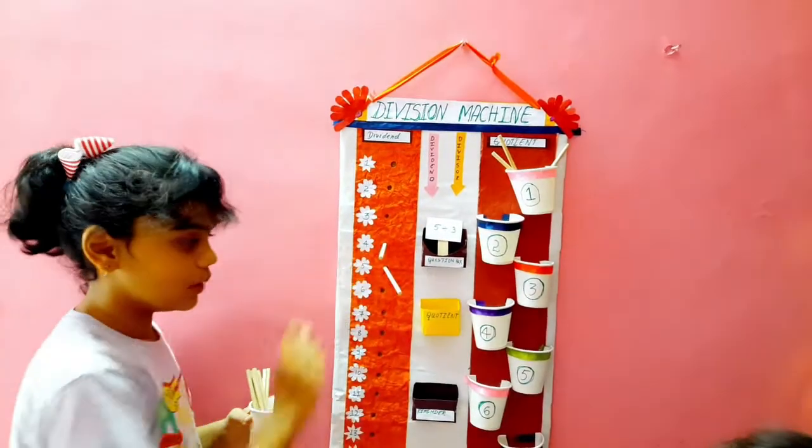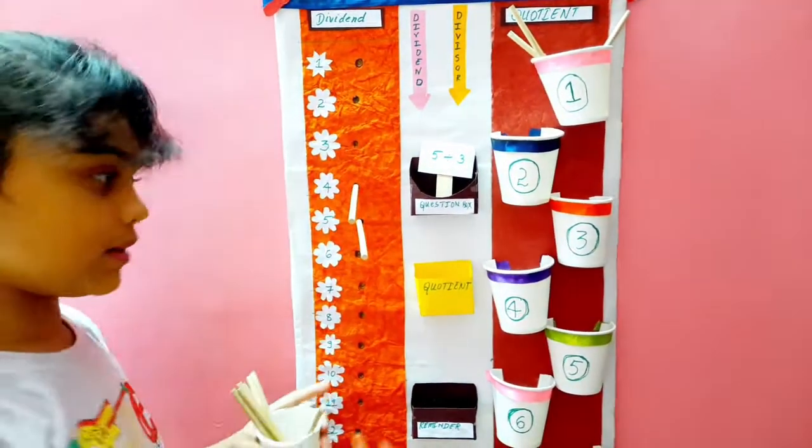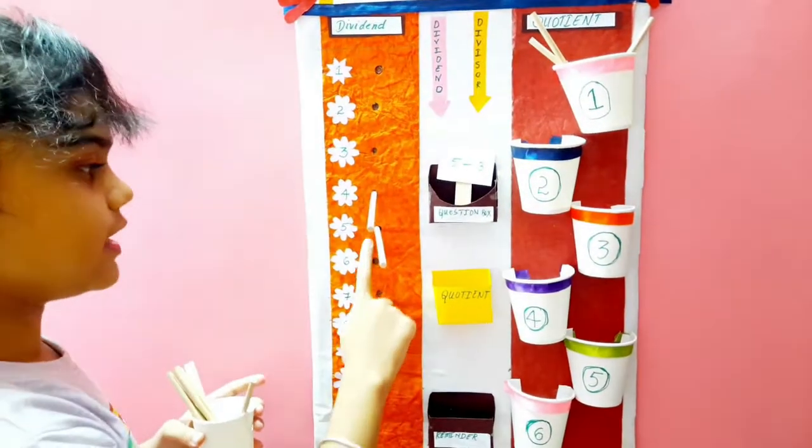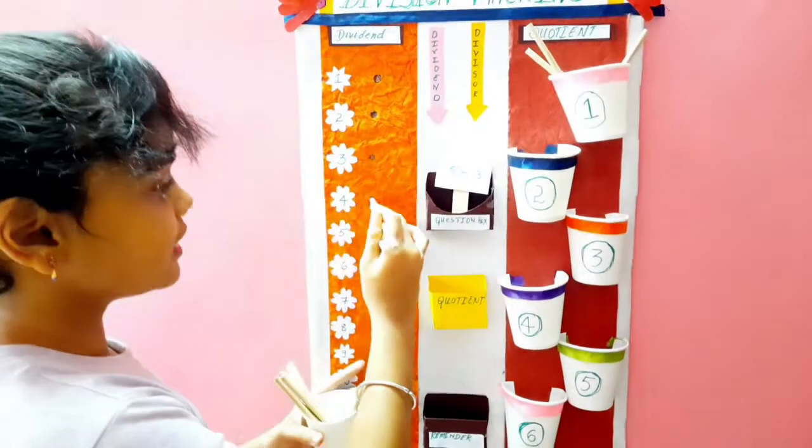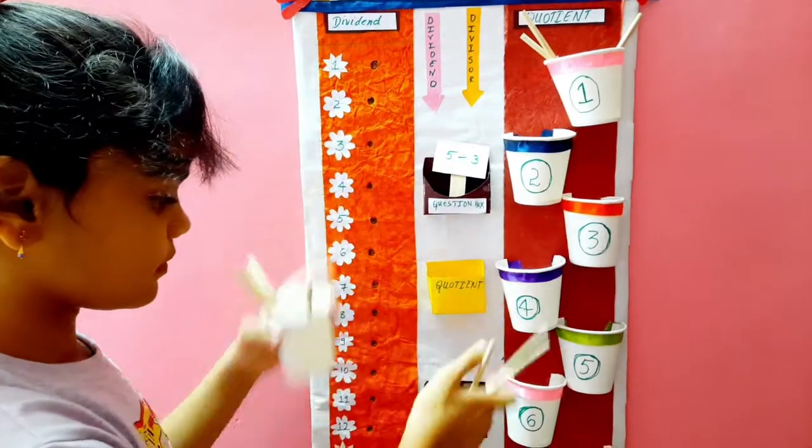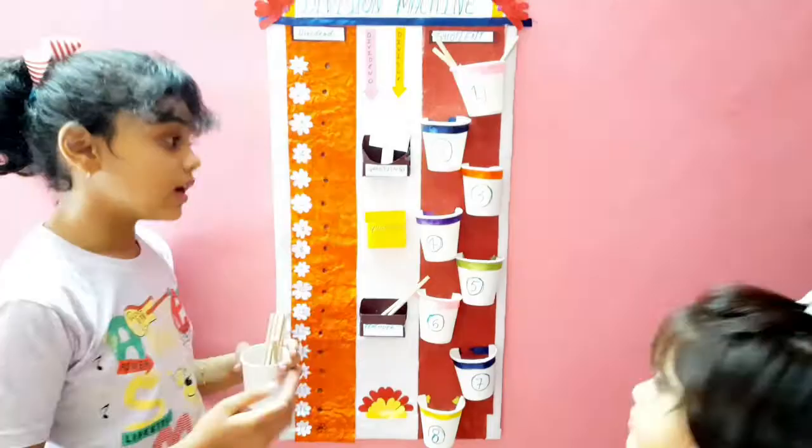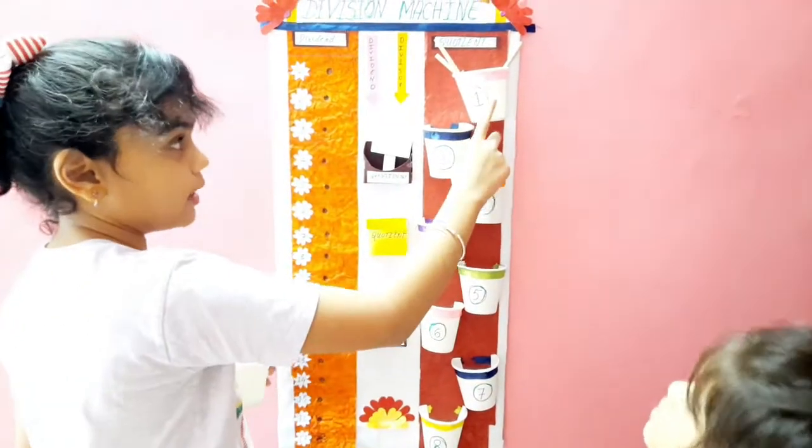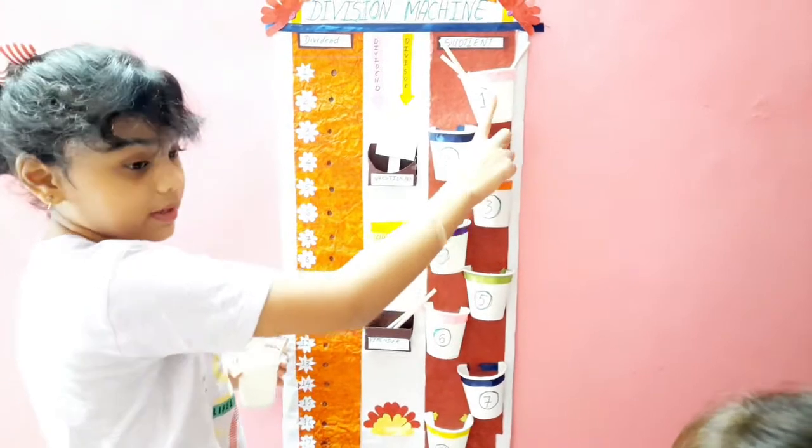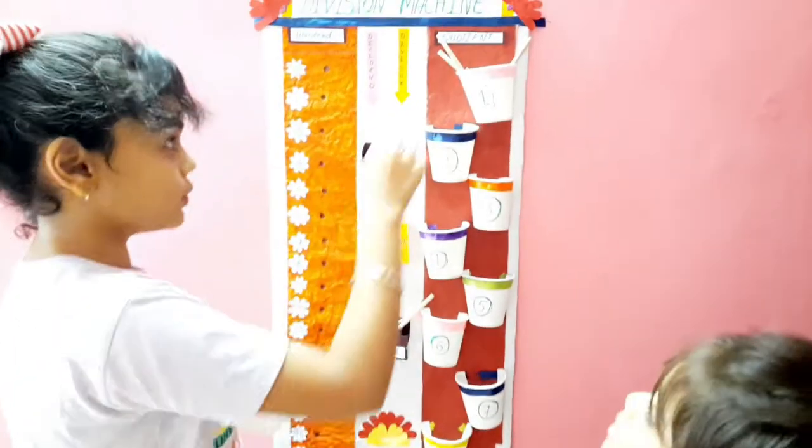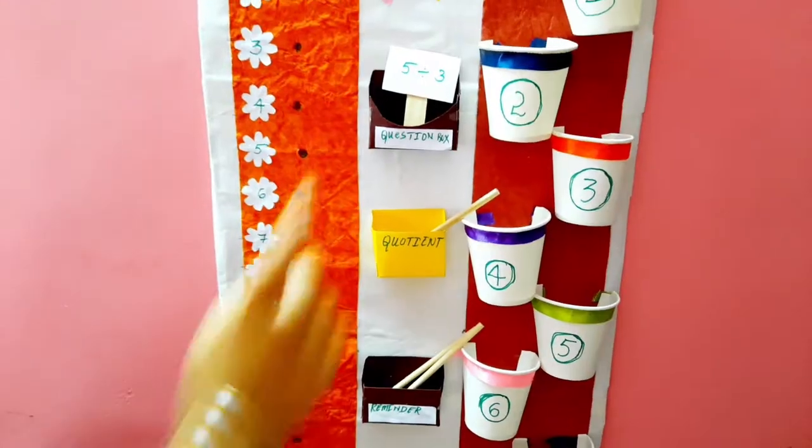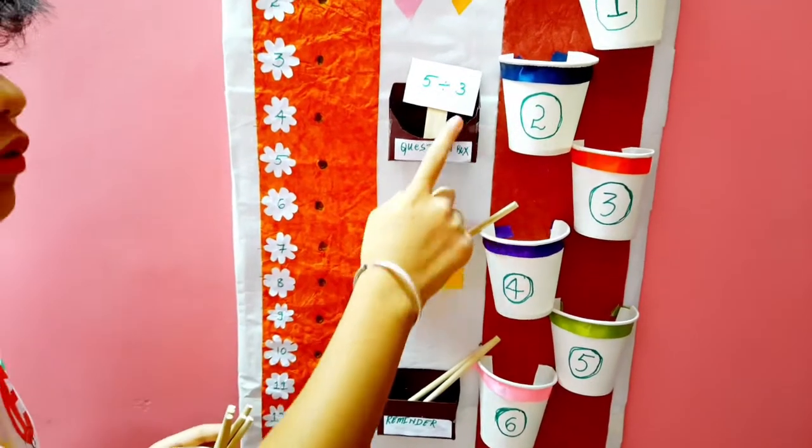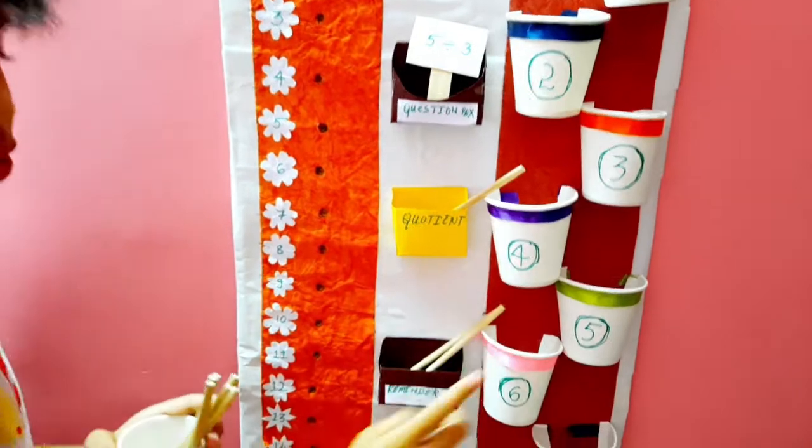So, we have only 2 left. Again, we need to pick out 3. But, we don't have 3. So, these 2 are reminder. Let's keep them in reminder box. Our quotient is 1 because 1 cup is only filled. So, for 5 divided by 3, 1 is the quotient and 2 is the reminder.